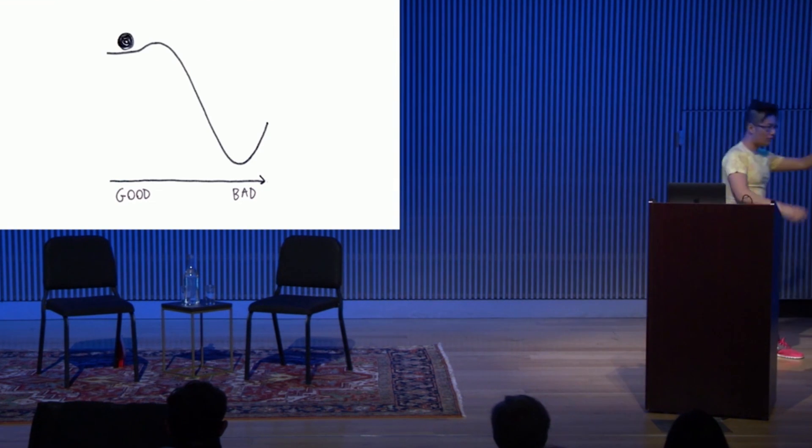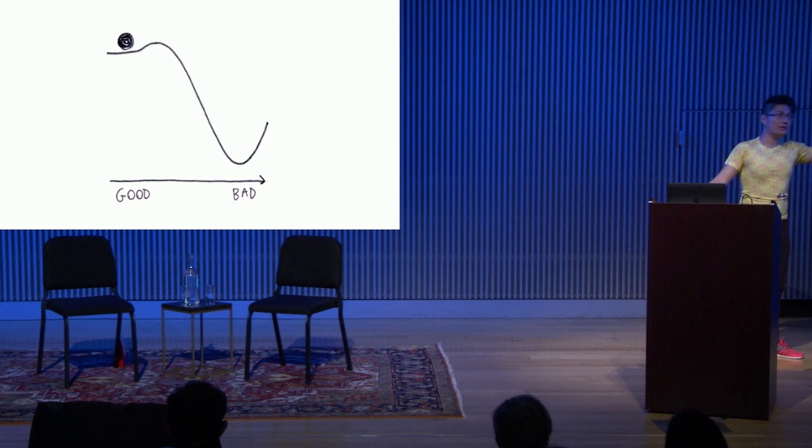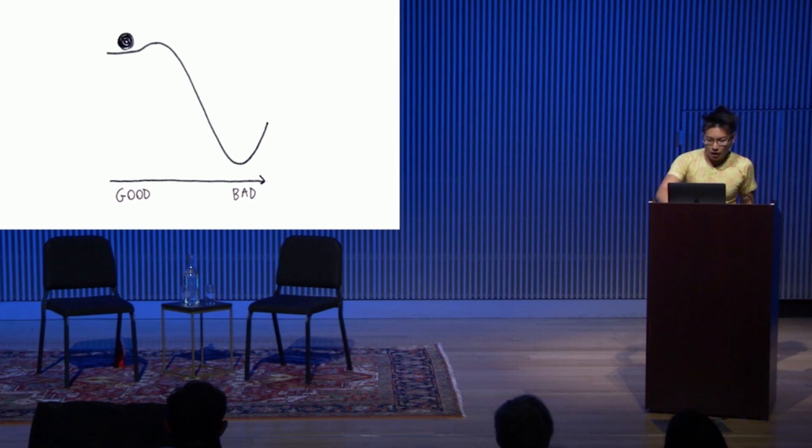But if the ball's all the way to the right, that means power stations have all failed, the banks are all bankrupt. I also want to clarify that the up-down axis is not good or bad. It's stable or unstable. So if a ball's really high up in the air, it's pretty unstable. But if it's down, grounded, close to the earth, it's pretty stable.